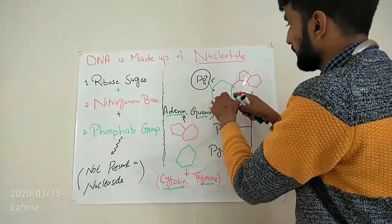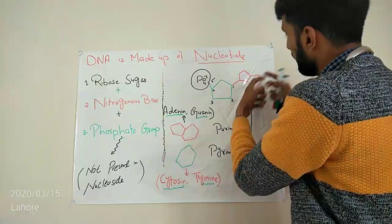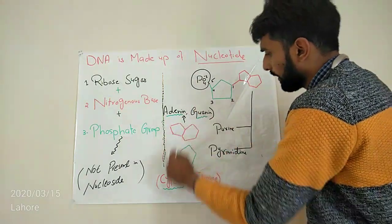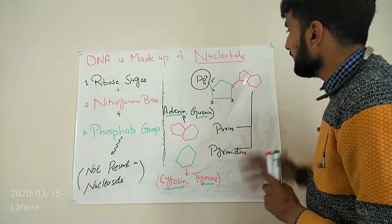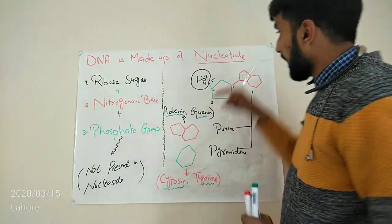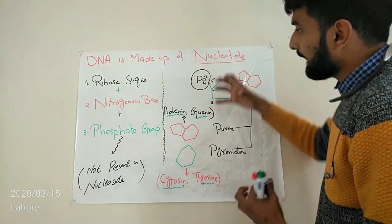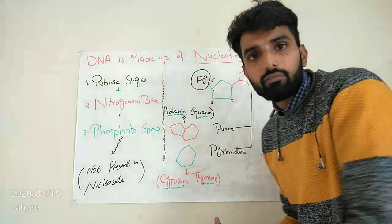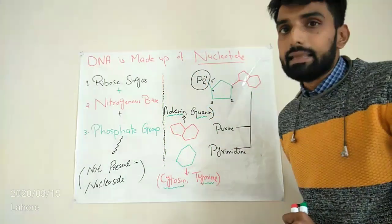So when all these three units, ribose sugar, nitrogenous base - nitrogenous base can be adenine, guanine, cytosine or thymine, anything - and phosphate. These three units combine to form one nucleotide and then these nucleotides keep on joining together, form one strand of DNA.